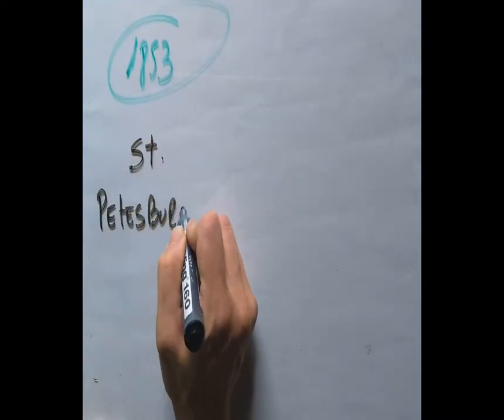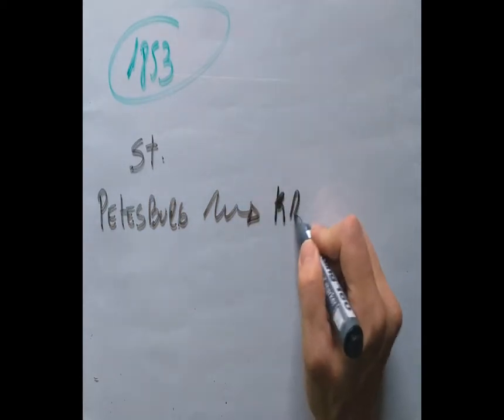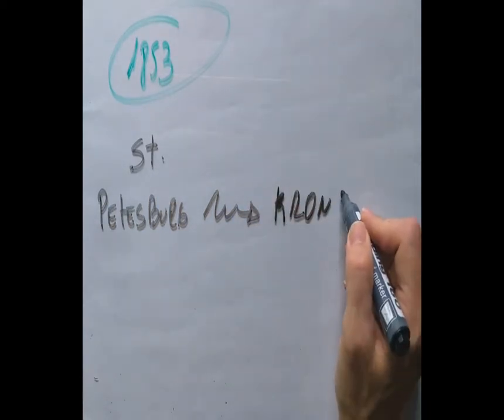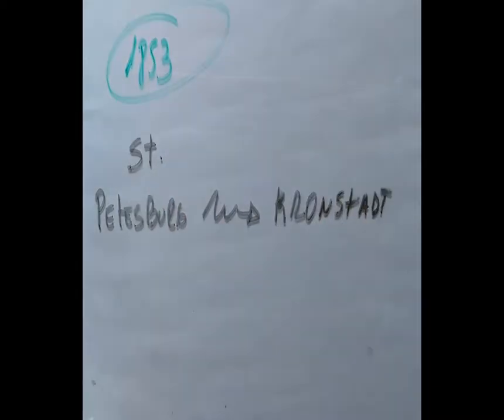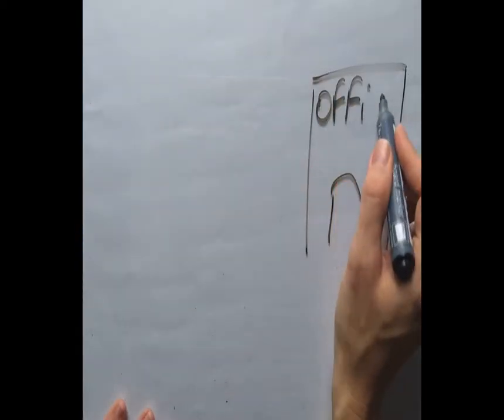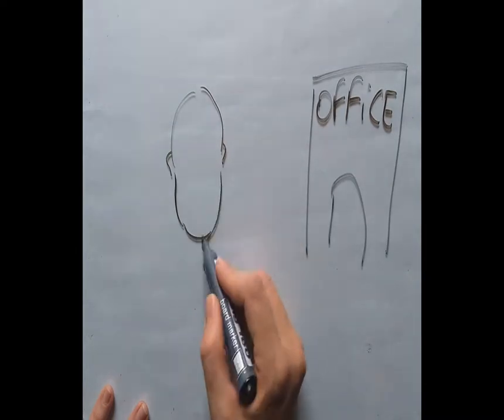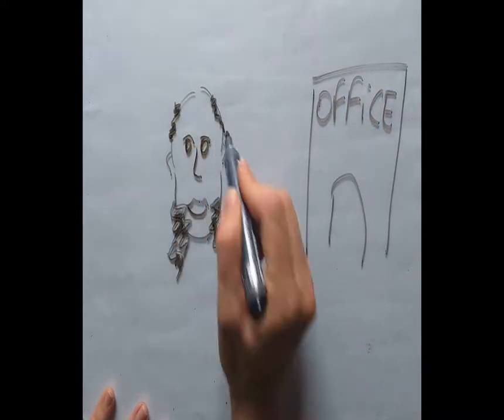In 1853, he is awarded a contract to install a line from St. Petersburg to Kronstadt, including a lucrative maintenance contract. A construction office is opened in St. Petersburg, headed by Werner's brother Wilhelm.